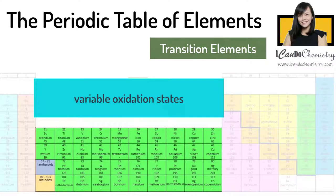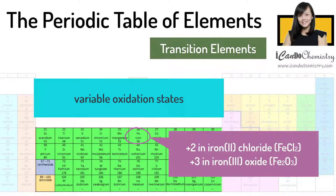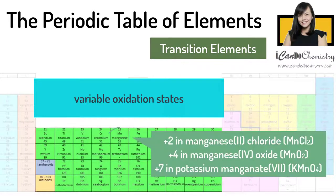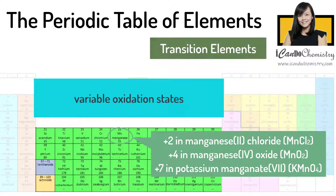Transition elements have variable oxidation states in compounds. Iron has an oxidation state of +2 in iron(II) chloride, FeCl2, and +3 in iron(III) oxide, Fe2O3. Manganese has an oxidation state of +2 in manganese chloride, MnCl2, +4 in manganese(IV) oxide, MnO2, and +7 in potassium manganate(VII), KMnO4.